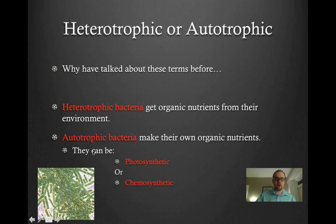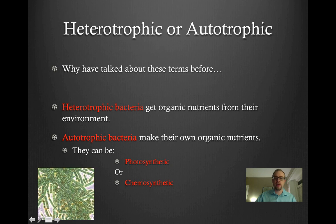Heterotrophic versus autotrophic — I defined these terms briefly in our vocabulary list, but just to touch on them again: heterotrophic bacteria need to get organic nutrients from their environment. They cannot produce their own organic nutrients; they need to get them from somewhere in their environment. Whereas autotrophic — the key word here being "auto" — they can produce their own. Autotrophic bacteria can make their own organic nutrients.